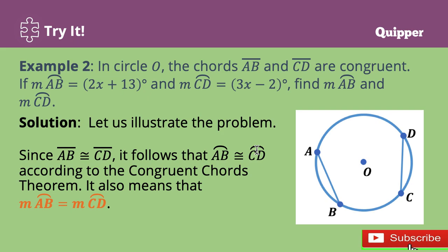Now let's illustrate the problem. We have line segment AB and line segment CD. As given, they are congruent, and the measure of arc AB is 2x plus 13 and the measure of arc CD is 3x minus 2 degrees. Since the two chords are congruent, it follows that their intercepted arcs are also congruent — that's according to the congruent chords theorem. It also means that measure arc AB is equal to measure arc CD, so we equate them.